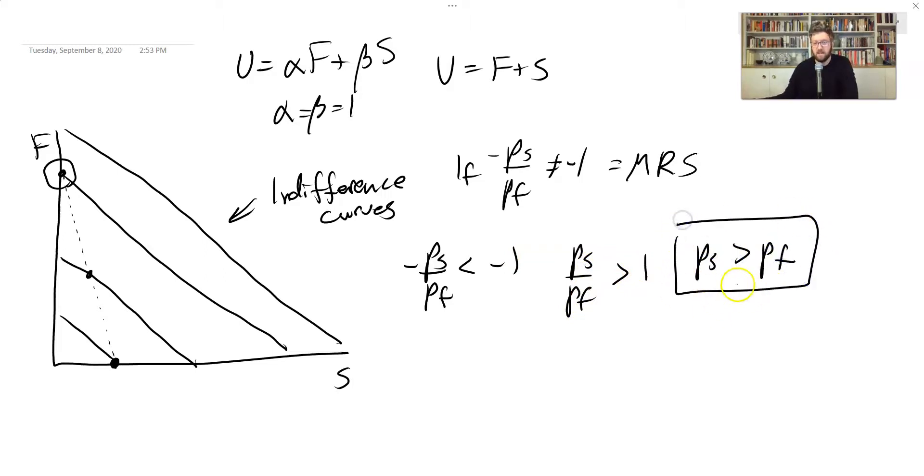And this makes it easy to see. If these goods are identical in terms of how much utility they give us, but food is cheaper than shelter, then never buy shelter, only buy food. And that's what this answer is telling us. So if PS is greater than PF, your demand for food is given by Y divided by PF. You take all your income, and you spend it on food.